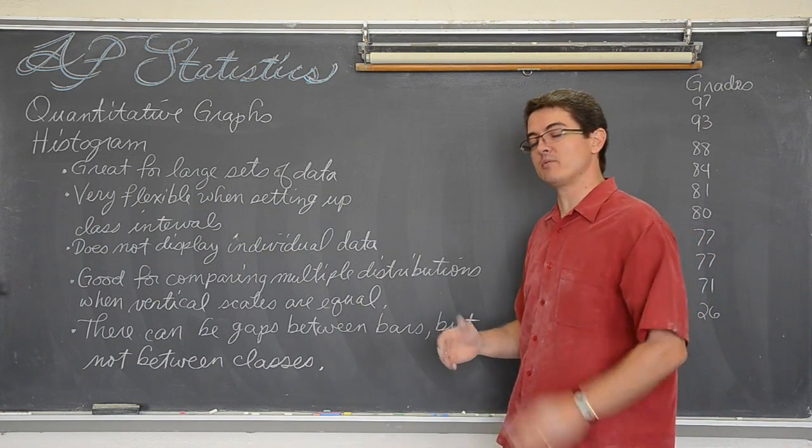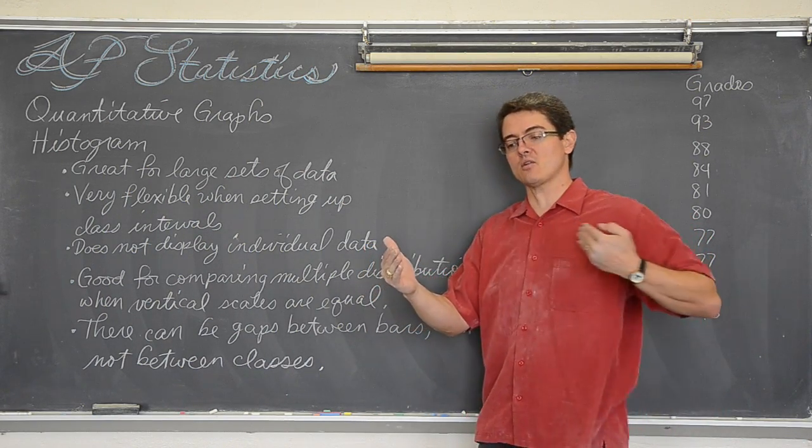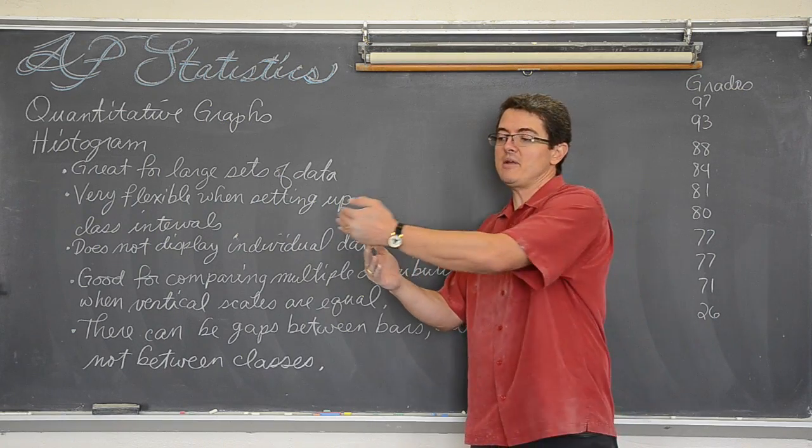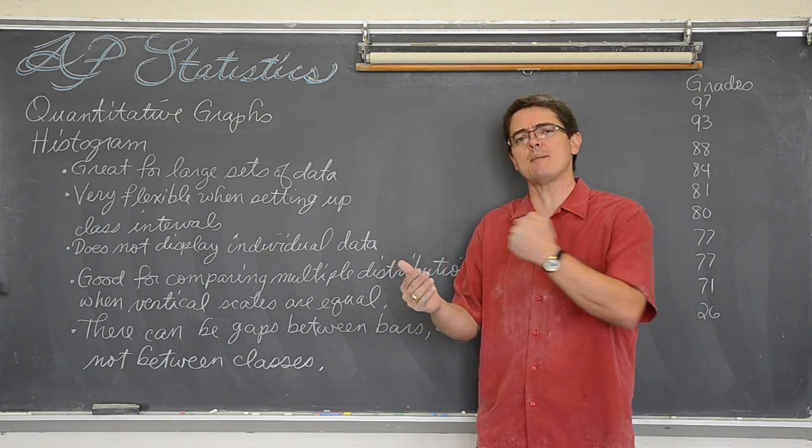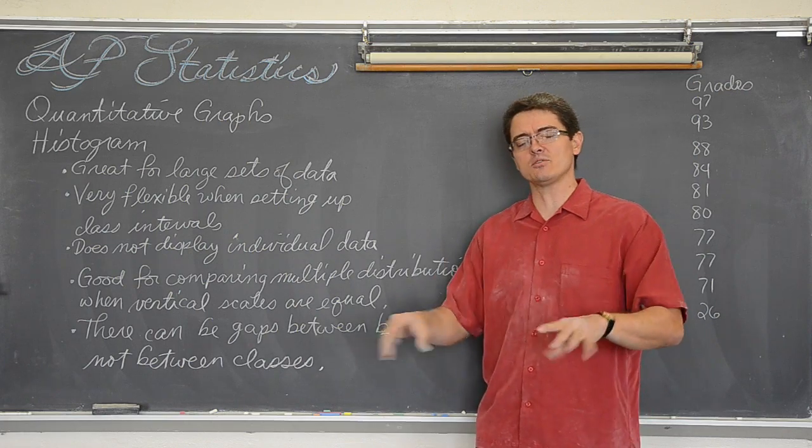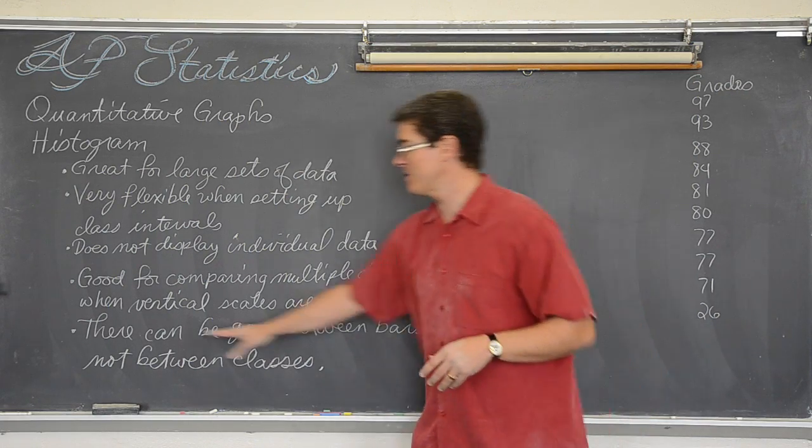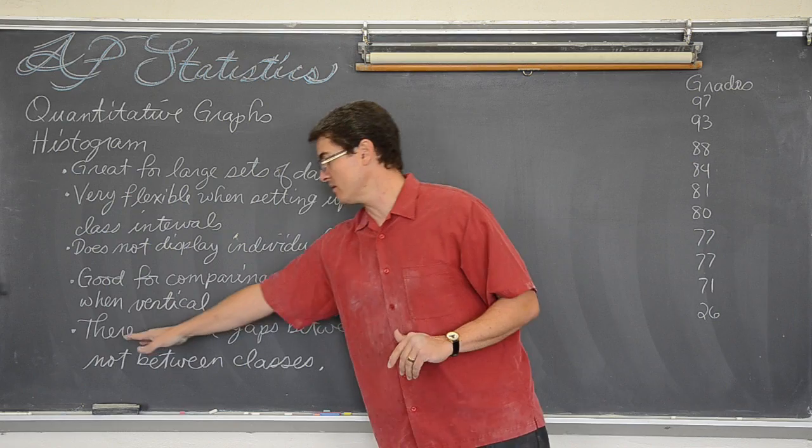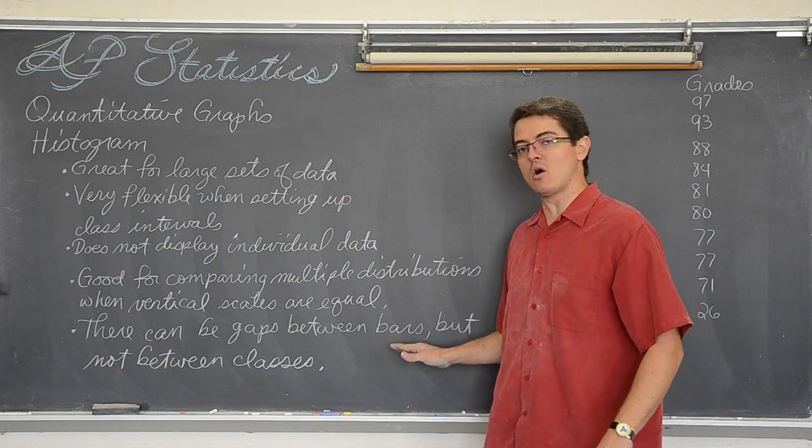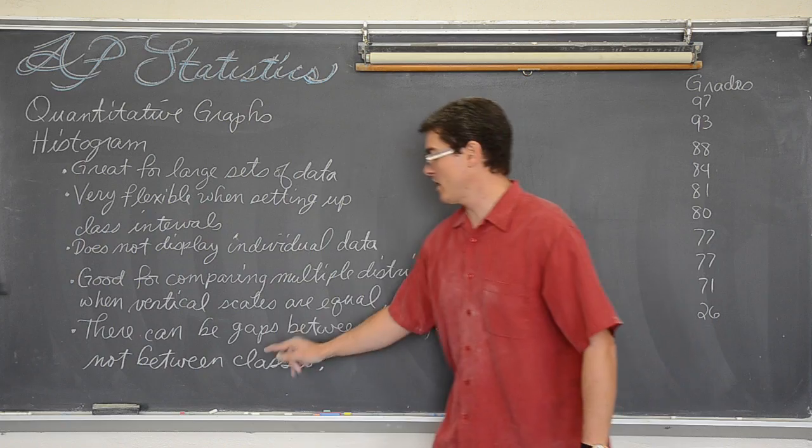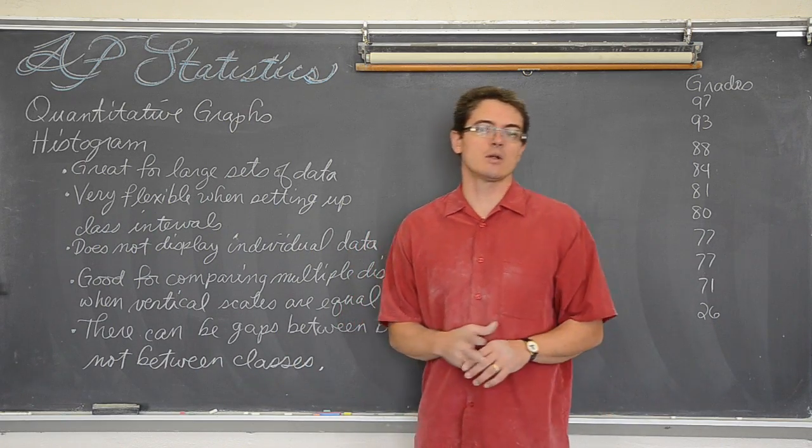When you make a histogram, the x-axis has to be a quantitative variable. That means it is a continuous quantitative variable. We are not going to leave any gaps for that data to fall out and through the bottom of the graph. So when you make a histogram with my hand or the calculator, I will share that in another video, there can be gaps between the bars, but not between the classes. I will show you what I am talking about.